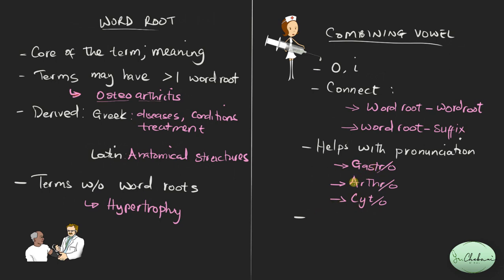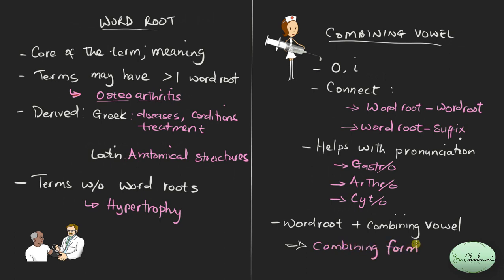When a combining vowel has been added to a word root, the word root plus the combining vowel becomes what we call a combining form. So a word root plus a combining vowel equals a combining form. For example, cyt is a word root, and cyt/o is a combining form.